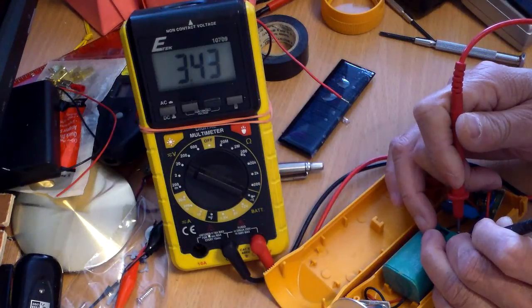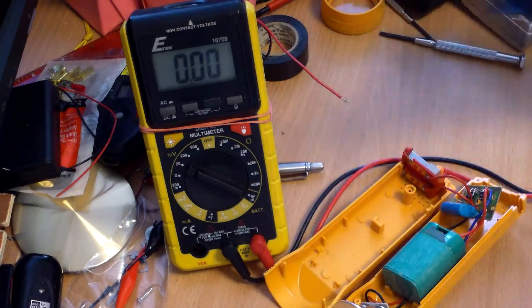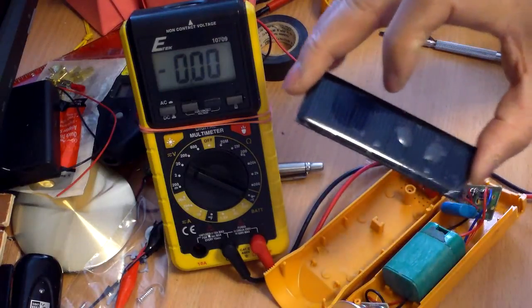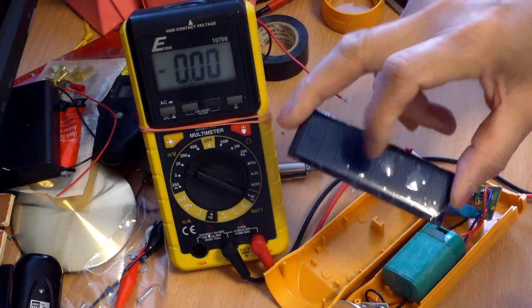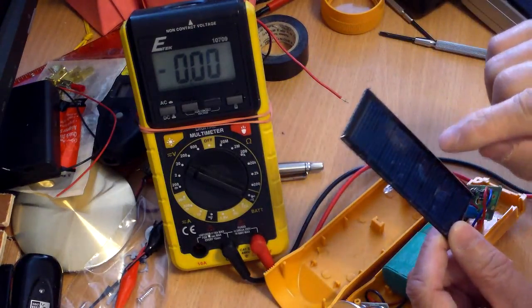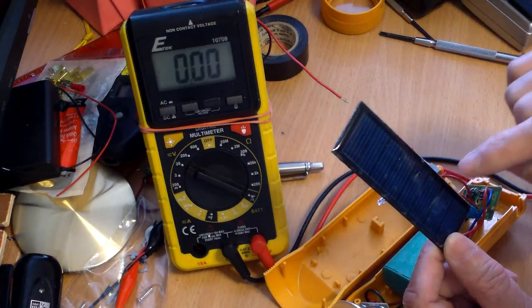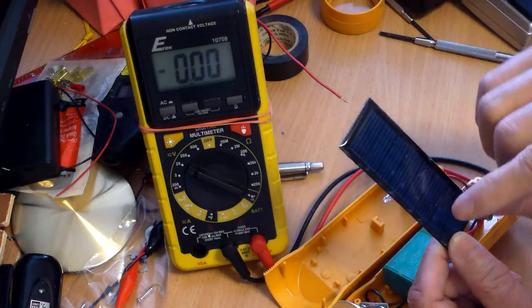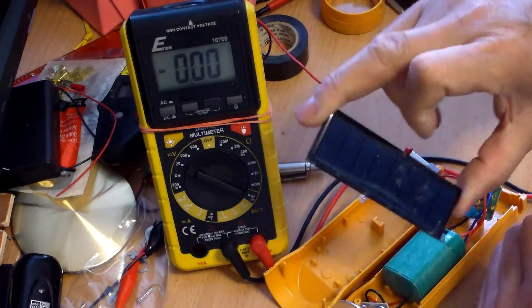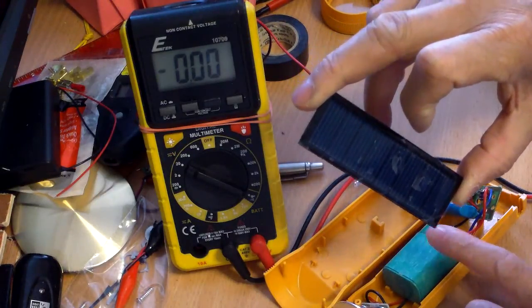So in using this, this solar panel has to give out at least 3.43 volts to charge it. Open voltage 4.4 minus 0.7 for the diode that I have to use, that would make it 3.7 volts about that, and that should be enough to charge this battery.